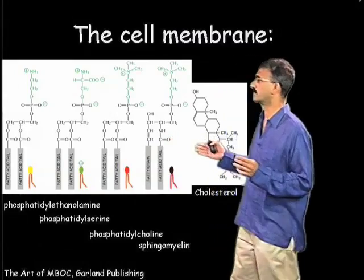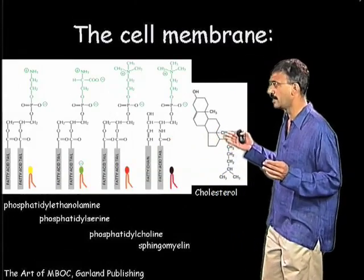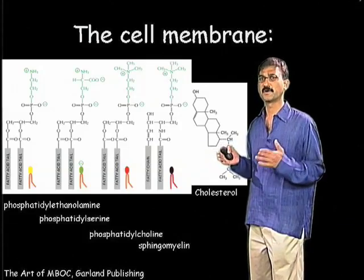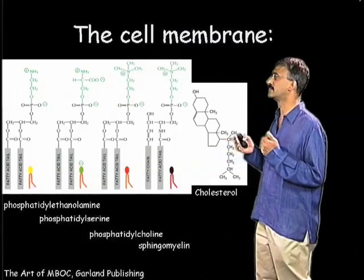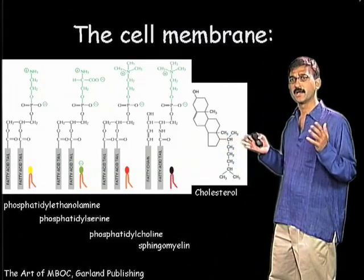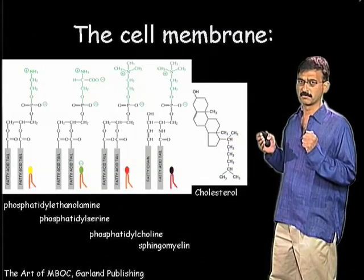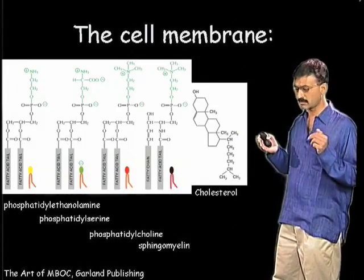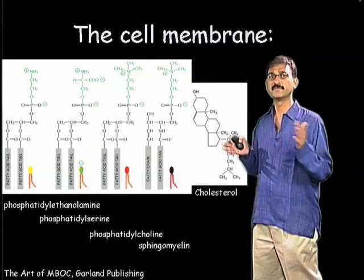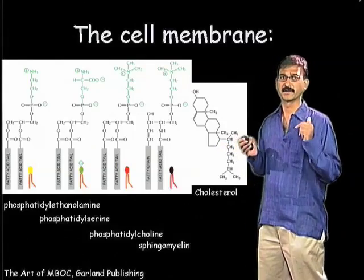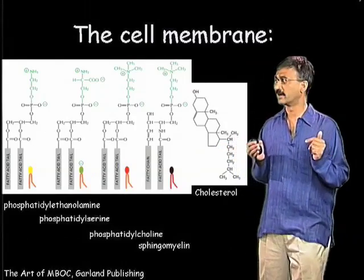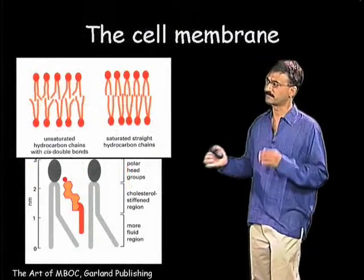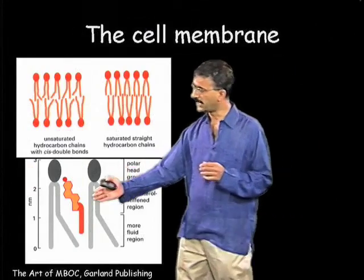An extremely important class of lipids is cholesterol, because cholesterol in most eukaryotic cells is about 50% in terms of the total content of the phospholipids at the cell surface. So in terms of mole fraction, cholesterol is often 50% of the total lipid composition of a cell membrane. It's an extremely unusual lipid because it has a planar structure.